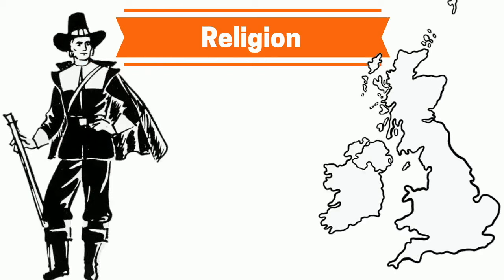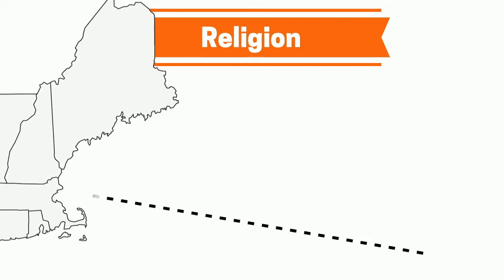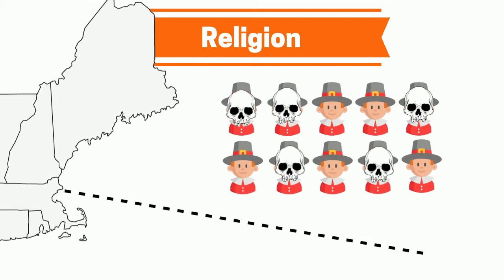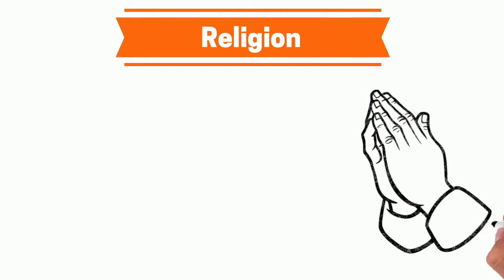Religion in the New England colonies was a really big deal. Remember, it was founded by Pilgrims — the same Pilgrims that left their home country in search of religious freedom. And by the way, half of them died within the first few months of living in the New World. Religion was important to them. They were strictly religious and they punished those that went against their faith. There are two kinds of religions we need to learn about in New England.